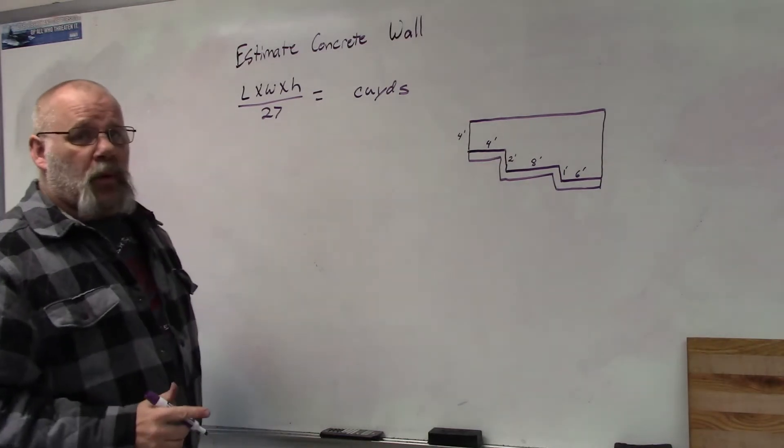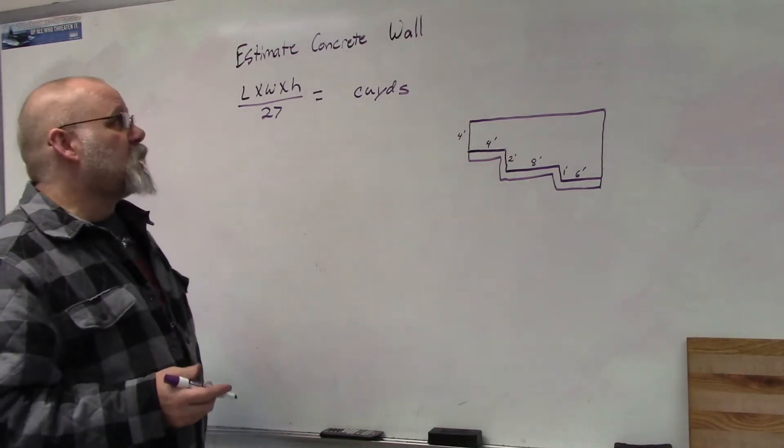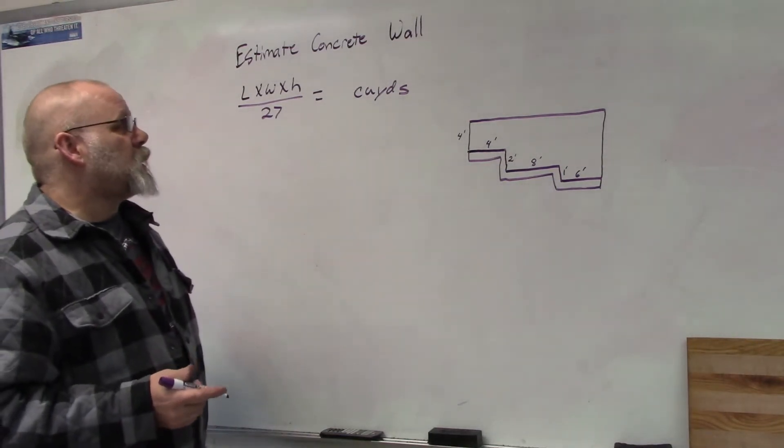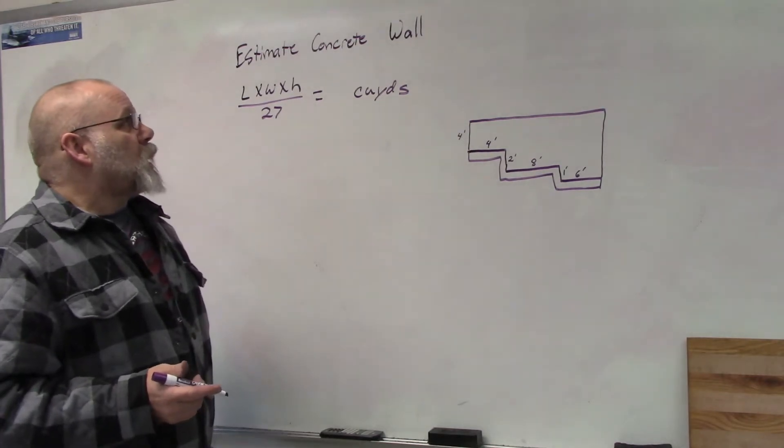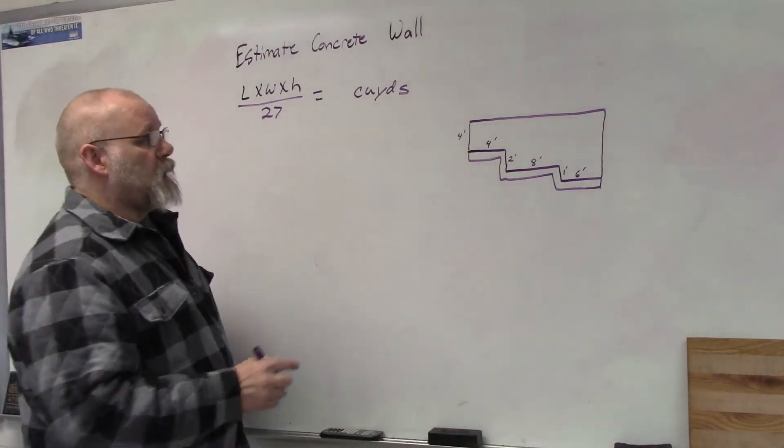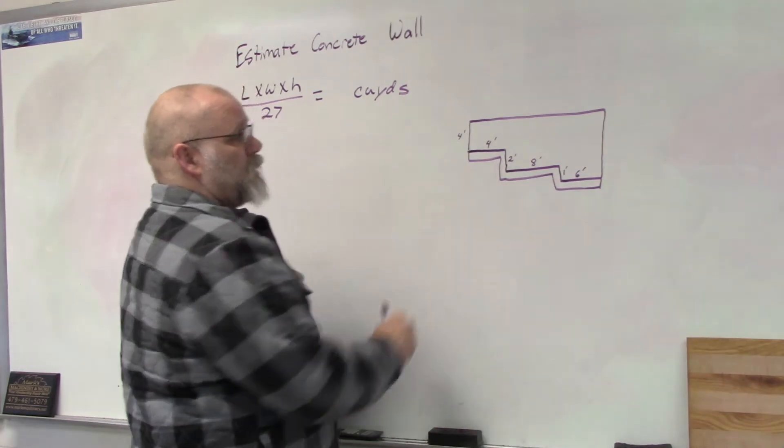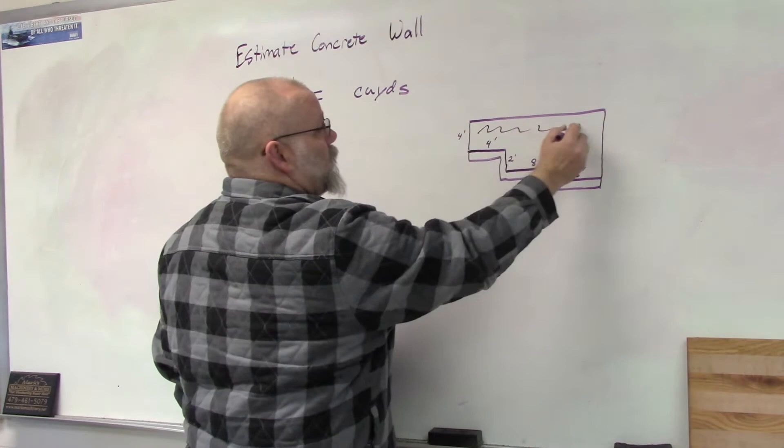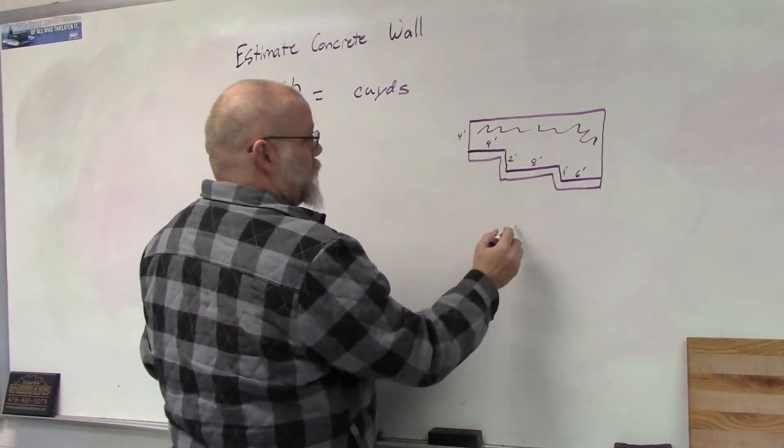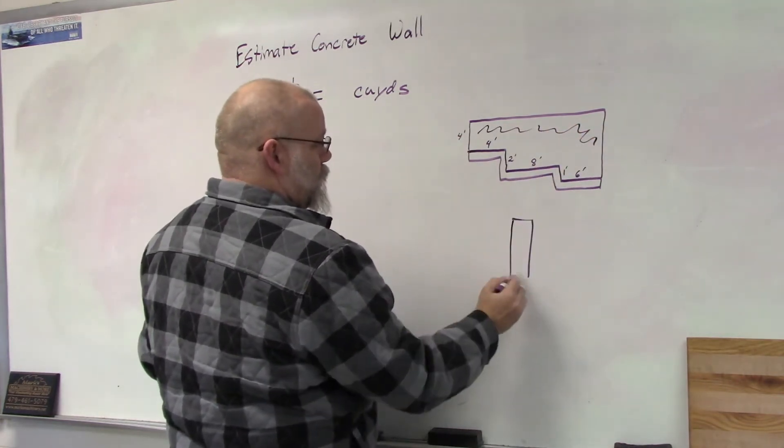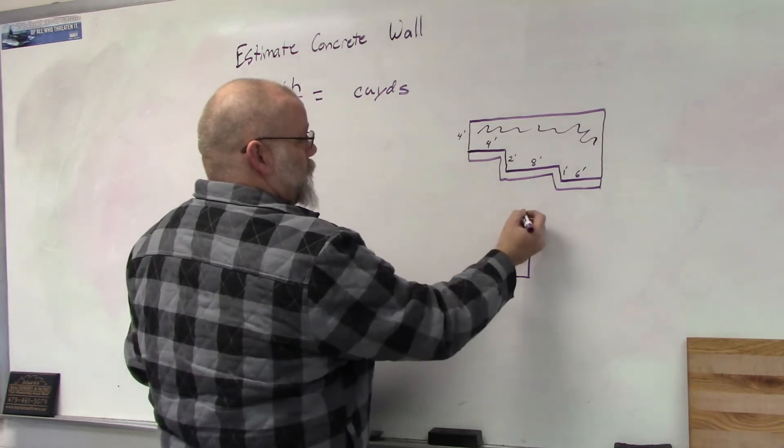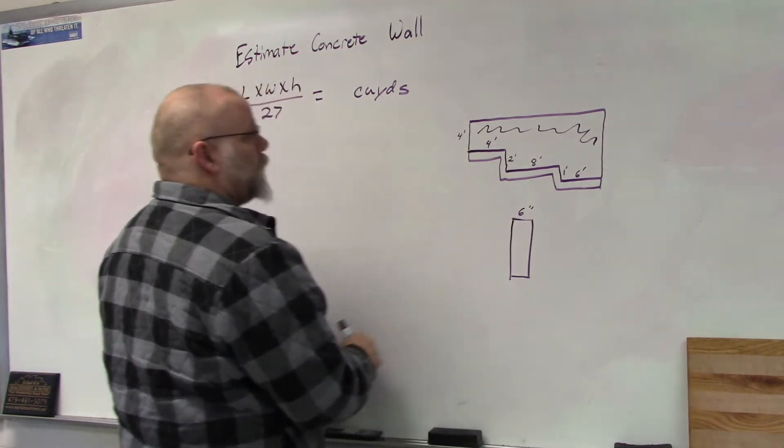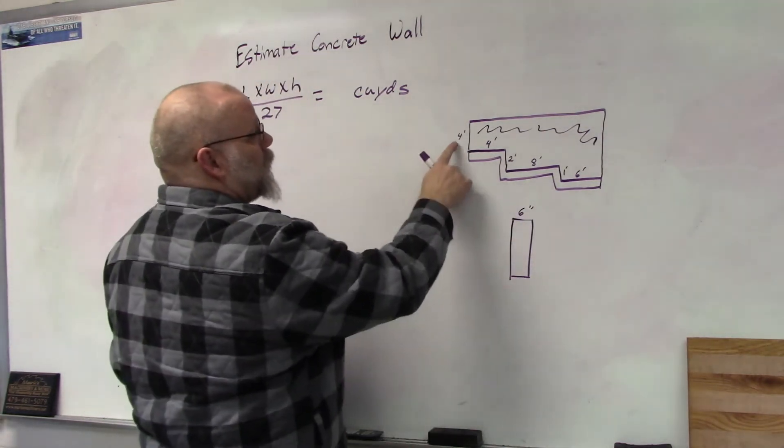In this video we're going to estimate the concrete for a wall that is sitting on a step footing. We want to know how much concrete it's going to take for this part. We're going to make it six inches wide and then we have to look at our diagram to find out what our heights are.